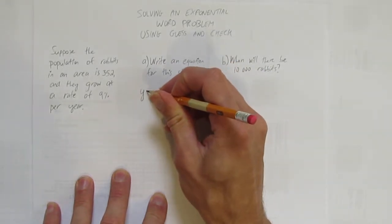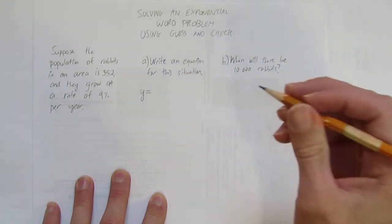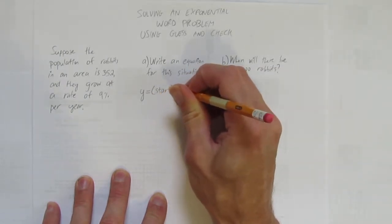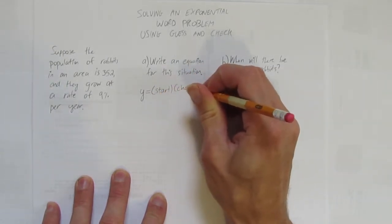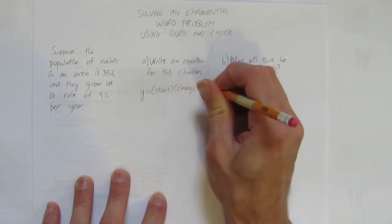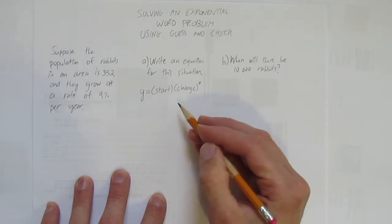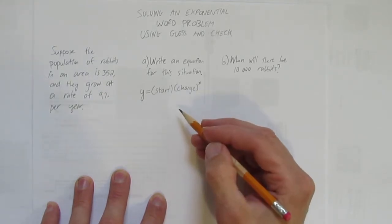you know I don't like as much the formula a times b to the power of x. I prefer using y equals start times change to the power of x. That's my general formula for an exponential, especially when I'm doing a word problem.